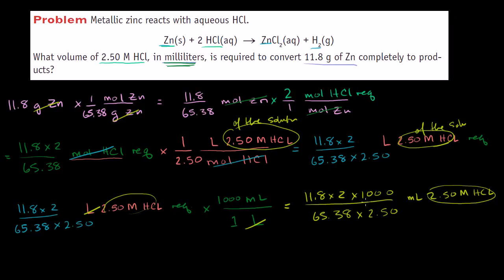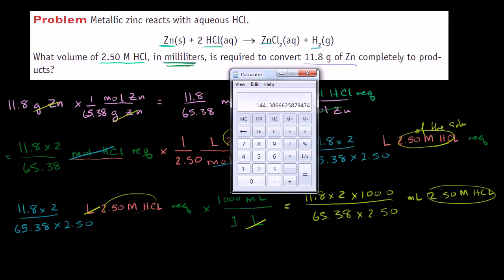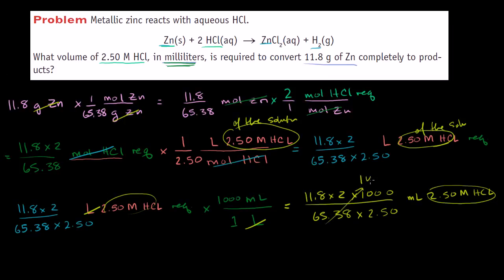Now we've solved the problem — we just need to calculate this number. Breaking out the calculator: 11.8 times 2 times 1,000 divided by 65.38, and then also divide by 2.5. That gives us 144. A couple of the numbers only have three significant digits, so we stick to three significant figures: 144 milliliters of the 2.5 molar hydrochloric acid solution. And we're done — hopefully you found that fun.